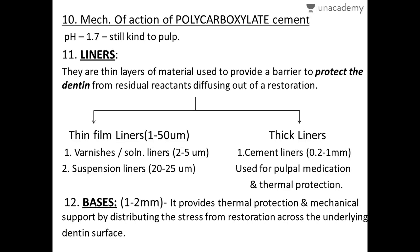Regarding the mechanism of action of polycarboxylate cement: despite its pH being highly acidic at 1.7, it is still kind to the pulp. The liquid is rapidly neutralized by the powder, and as the setting reaction proceeds, the pH of the mix rises rapidly. Due to the large size of the polyacrylic acid molecules, diffusion through the dentinal tubules is limited, making it kind to the pulp.